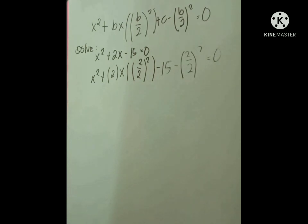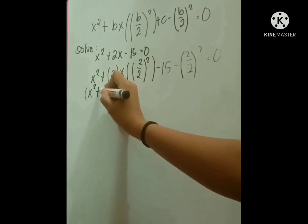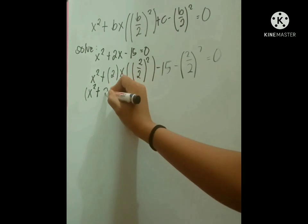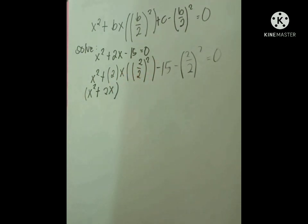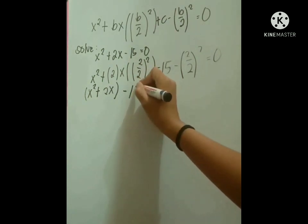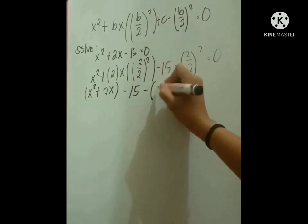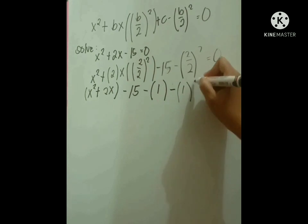Next, let us simplify this. So we have x squared plus 2x minus 15 minus 1, because 2 divided by 2 is 1, minus 1 squared equals 0.